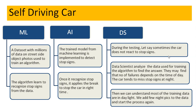This is a simple example — there is a lot more AI needs to do. Here comes the role of data science: during testing, let us say sometimes the car does not react to stop signs. Data scientists analyze the data used for training the algorithm to find the answer. They may find that the number of failures depends on the time of day — the car tends to miss stop signs at night. They then find that most of the training data was in daylight, so they add night pictures to the data and start the process again.